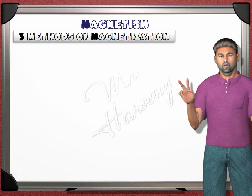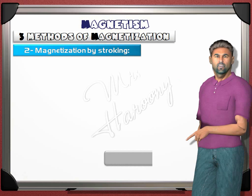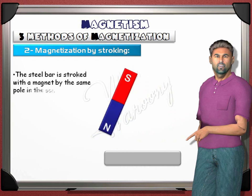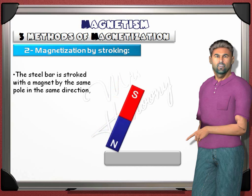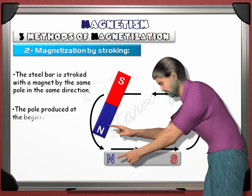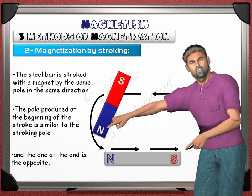The second method of magnetizing a steel rod is by stroking. Rub the iron rod in one direction using one pole — do not rub back and forth. The steel bar is stroked with the magnet by the same pole, in the same direction, and this will produce a magnet. The end of the rod where we start the stroking will be the same pole as the stroking pole. In this example it will be a north, since the stroking was done using a north pole. The other end of the rod will be opposite to the stroking pole.